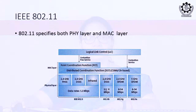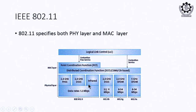We will continue with the wireless LAN (WLAN) that we studied in the last class, specifically the architecture of WLAN. In the WLAN, the physical layer supports different kinds of communication like infrared, FHSS (frequency hopping spread spectrum), DSSS, and OFDM, as we studied in the last class.